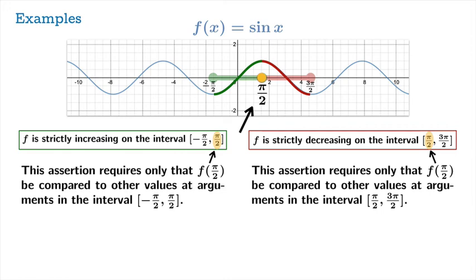In fact, it's not a contradiction if you unravel the definitions. The increasing statement on the left requires only that you compare the value of f at π/2 with other values at arguments in the interval to the left of π/2. Similarly, the decreasing assertion only requires that you compare this to arguments to the right of π/2. None of those comparisons actually conflict with each other. It's as though standing at π/2, when you look one direction you can say one thing, and when you turn 180 degrees you can say something equally true — you don't have to do both at the same time. So there's really no contradiction.